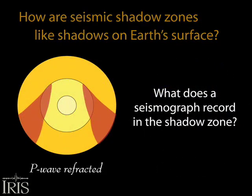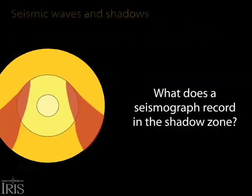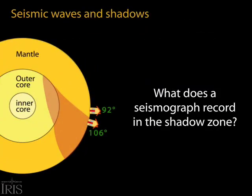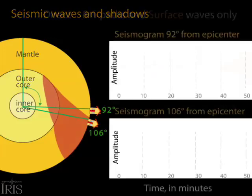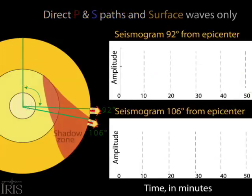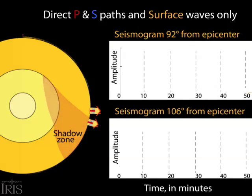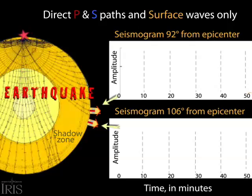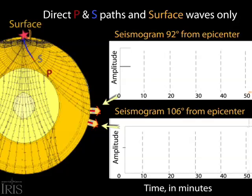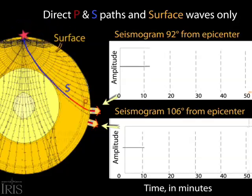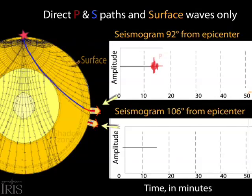So what does the seismograph record in the shadow zone? First we look at just the direct and surface wave arrivals to two seismic stations — one outside the shadow zone and one inside the shadow zone. An earthquake sends P and S body waves through the earth. The direct P and S waves arrive at the station outside the shadow zone. Only highly sensitive seismometers can detect these. The houses merely depict direction of motion.